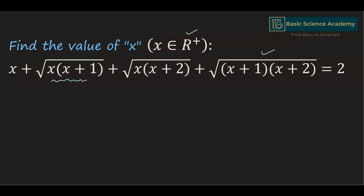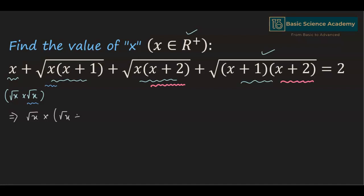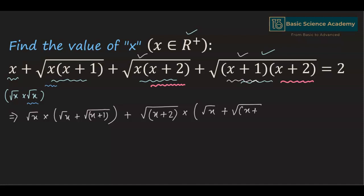Since we have a square root in these three terms, we can write x as square root of x multiplied by square root of x. Now we have square root of x common in the first two terms and square root of (x+2) common in the next two terms. Taking square root of x common in the first two terms gives us square root of x multiplied by (square root of x + square root of (x+1)), plus square root of (x+2) multiplied by (square root of x + square root of (x+1)). This equals 2.